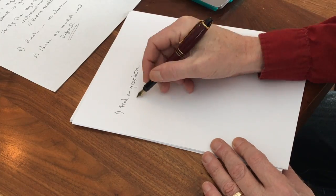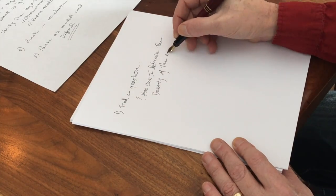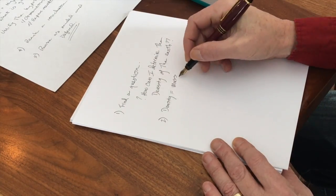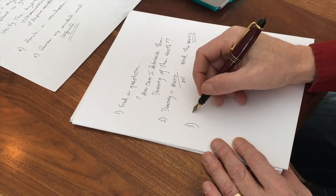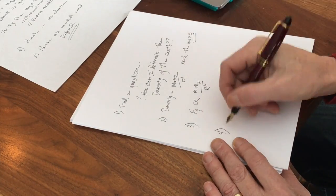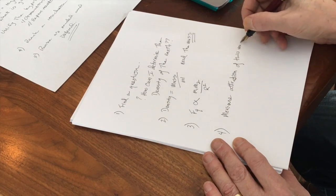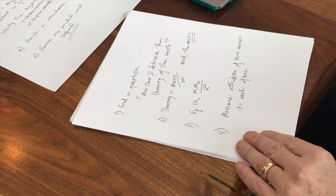So before we get started, let's go ahead and organize our thoughts. The first thing is he used Newton's universal gravitational law that said the force of gravity is proportionate to the product of the masses divided by the radius squared.